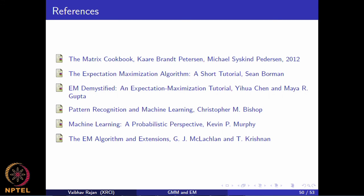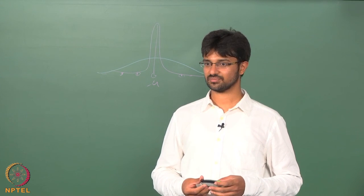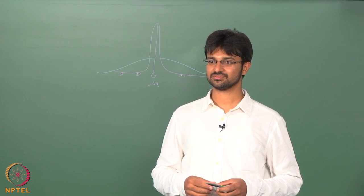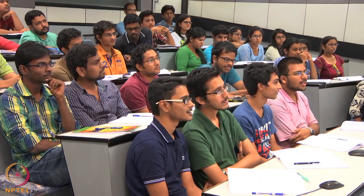The two standard references have very nice explanations for EM, and there are nice tutorials available. The Matrix Cookbook covers matrix derivatives. McLachlan and Krishnan's book on the EM algorithm is the standard reference if you want to go really deep. Regarding missing data: EM can always handle it, but when there is a lot of missing data, it may not give good results.